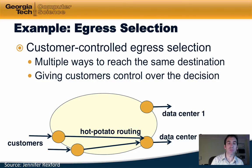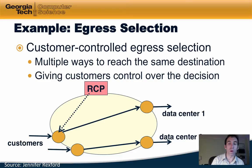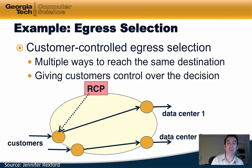A second example would be to let customers themselves control the selection of egress routers. If a particular customer wanted to use one data center or another to reach its particular services, the network could use the RCP to send traffic for one customer to one data center and another customer to a different data center. This would be very difficult in today's networks because BGP is routing traffic based on destination prefix, so all traffic regardless of customer would go to the same data center. The RCP could route traffic to different data centers depending on the source, in particular depending on which customer the traffic was originating from.